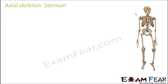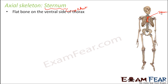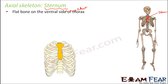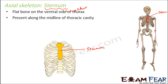The next part of the axial skeleton is the sternum. The word sternum is a Greek word meaning chest. This chest bone is also known as the breast bone. It is a flat bone on the ventral side of the thorax, present along the midline of the thoracic cavity.